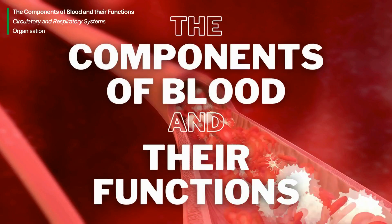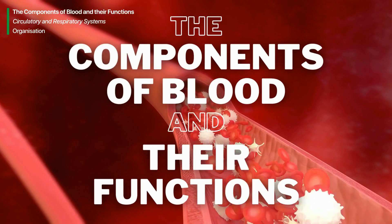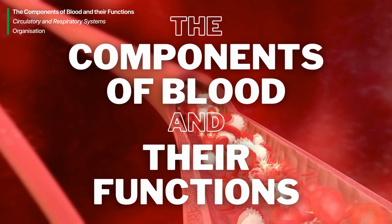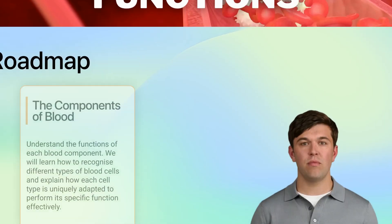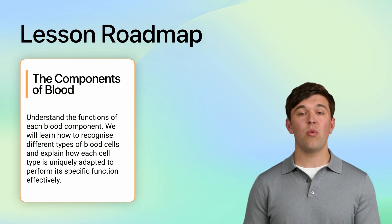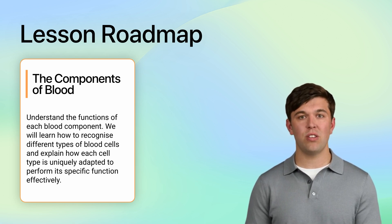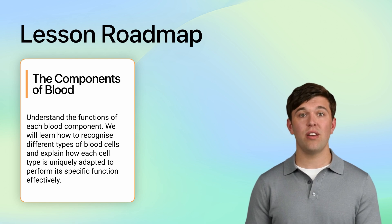Welcome to today's lesson on the components of blood, where we will explore the various elements that make up our blood and their functions within the circulatory system. In our lesson today, we will focus on understanding the functions of each blood component. We will learn how to recognise different types of blood cells and explain how each cell type is uniquely adapted to perform its specific function effectively.